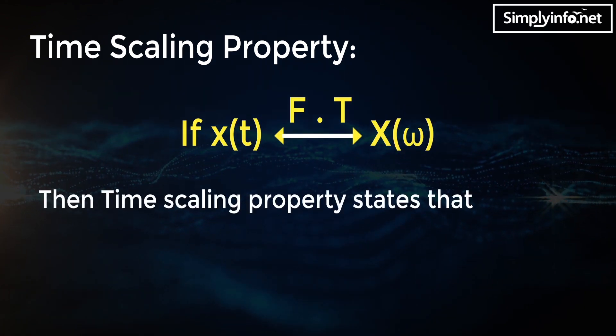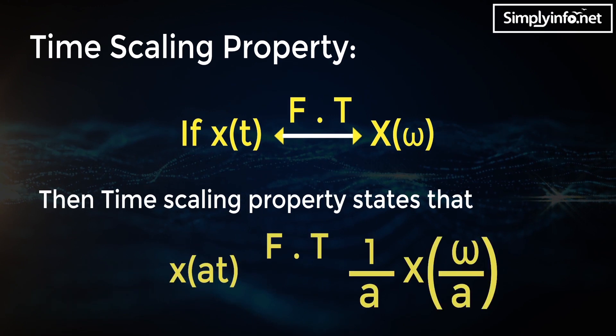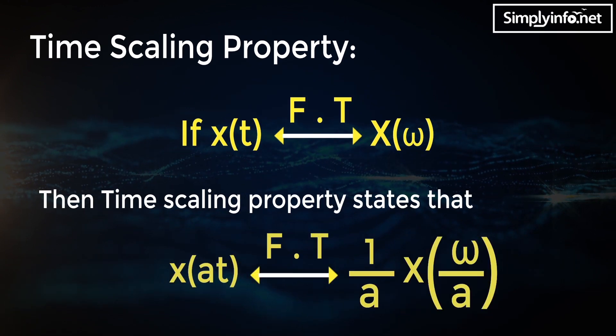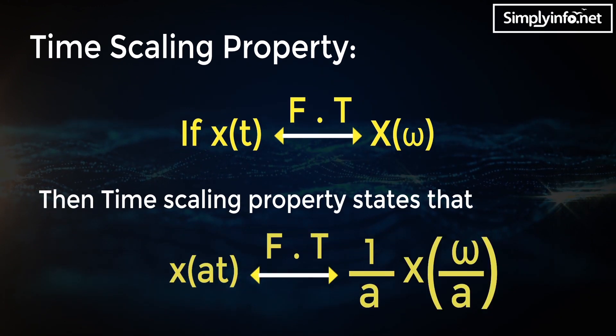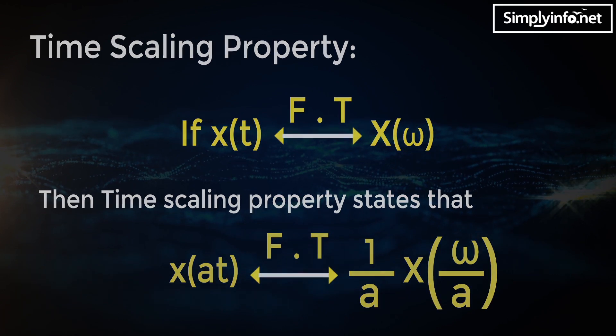Time scaling property: if Fourier transform of x(t) is X(ω), then the time scaling property states that Fourier transform of x(at) is equal to (1/|a|) · X(ω/a).